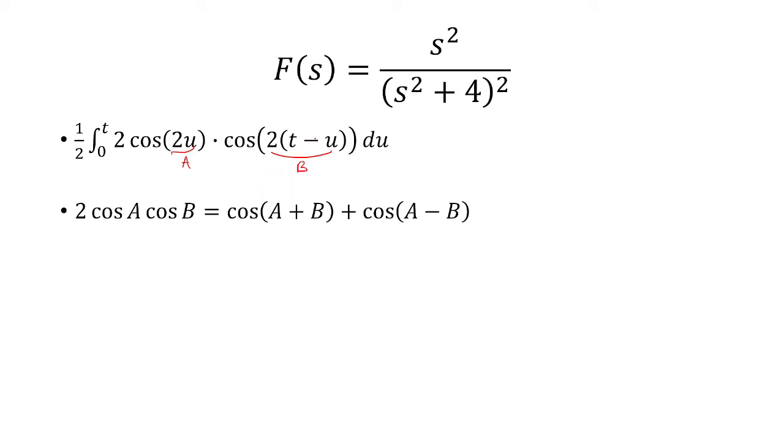So when I add these, the 2us go away, and I'm left with 2t. And when I subtract these, I have 2u minus negative 2u, which is 4u, and then a negative 2t.